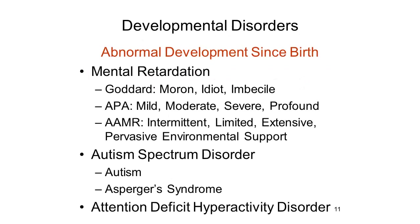In the organic brain syndromes, the development of various mental functions in the individual proceeds normally until something occurs that causes some insult, injury, or disease affecting brain tissue. But in the developmental disorders, there is an abnormal pace of development affecting one or more mental functions, pretty much from birth. The classic example is mental retardation, in which the individual shows subnormal levels of mental function, as indicated by an IQ score less than 70—in degrees ranging from mild to profound—accompanied by an inability to meet the demands of his or her environment.